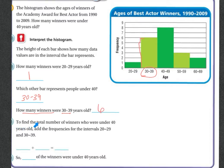The next one says to find the total number of winners who were under 40 years old, add the frequencies for the intervals of 20 through 29 and 30 through 39. So there was 1 here and 6 here, so we're going to add those together. 1 plus 6 equals 7. So 7 of the winners were under 40 years old.